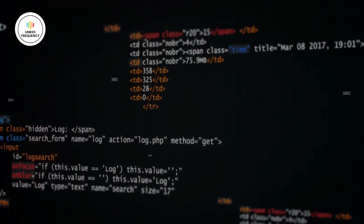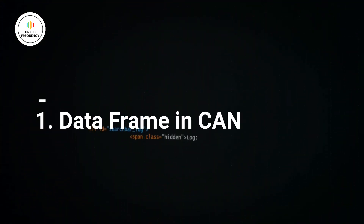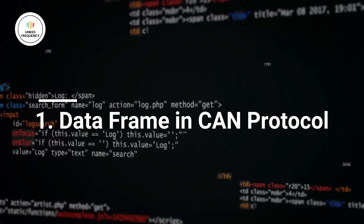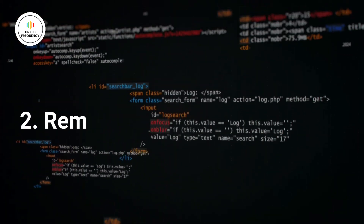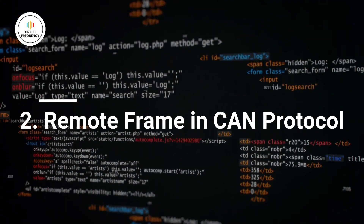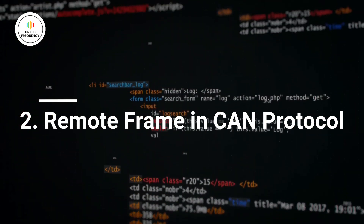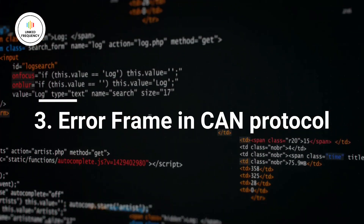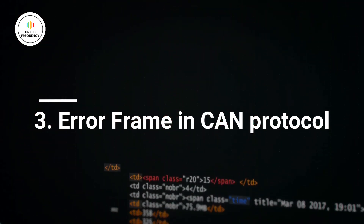Let us list the different types of frames in the CAN protocol. The first one is DataFrame, which is used to send the data in the CAN network. The second one is RemoteFrame, which is used to request the data in the CAN network. The third one is ErrorFrame, which is used to send the error information in the CAN network.